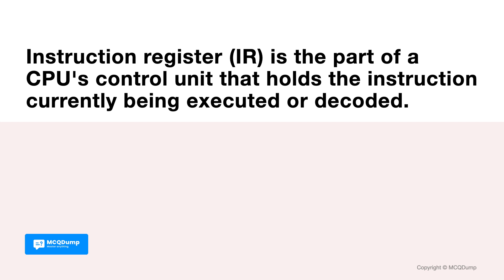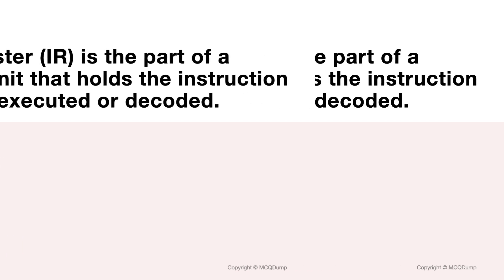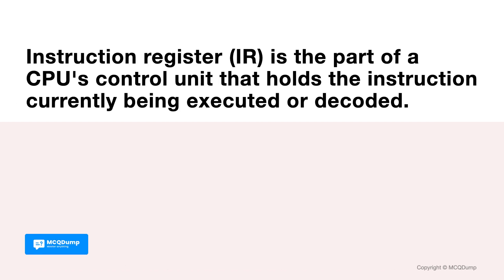Instruction register (IR) is the part of a CPU's control unit that holds the instruction currently being executed or decoded. It is also called Current Instruction Register (CIR).